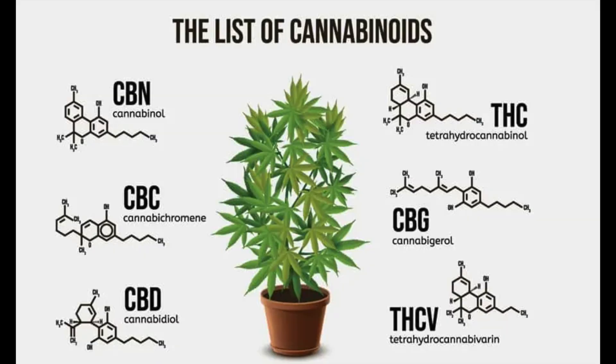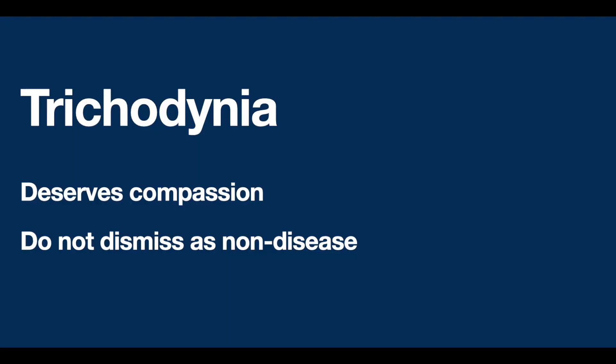Sixthly, as substance P plays an important role, it is logical to try inhibitors of substance P like the cannabinoids. In summary, though not a life-threatening problem, trichodynia can seriously interfere with quality of life and hence deserves a more compassionate approach by the treating physician, and should not be dismissed as a non-disease. Thank you.